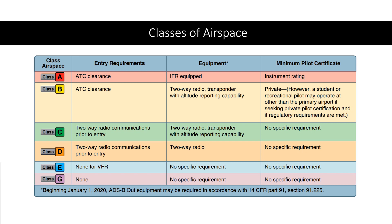This chart right here shows the different airspaces that are in the United States. They're lettered A through G and they skip F. The top of the chart is the most restricted airspace and the bottom is the least restricted. Everything class E and above is considered controlled airspace. Class G is the only class that's considered uncontrolled airspace.